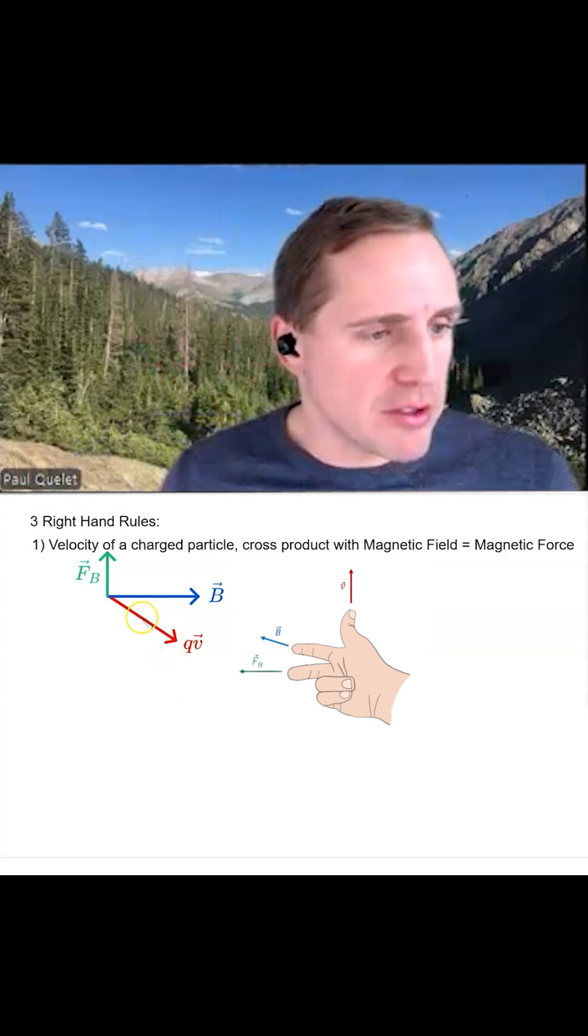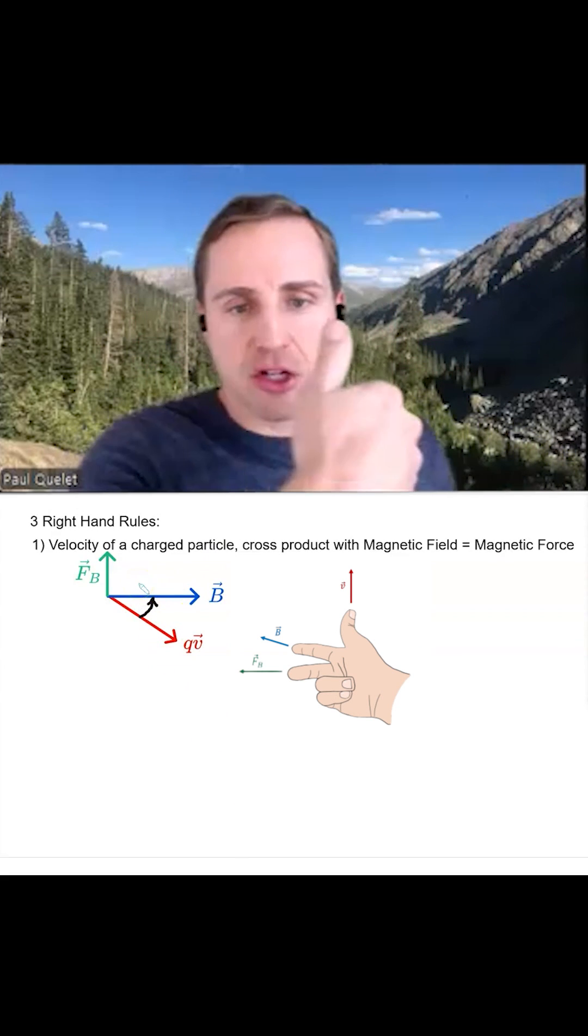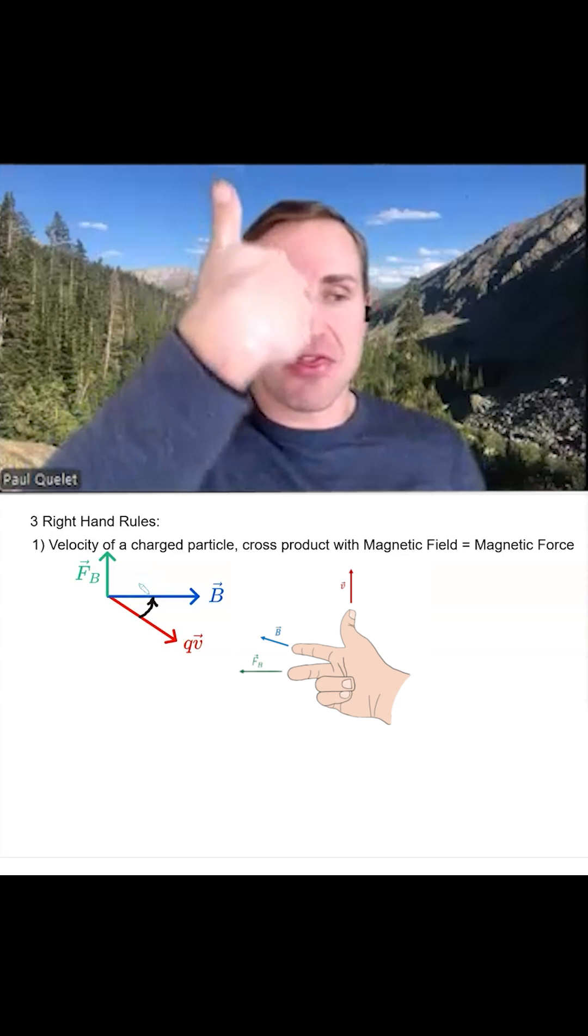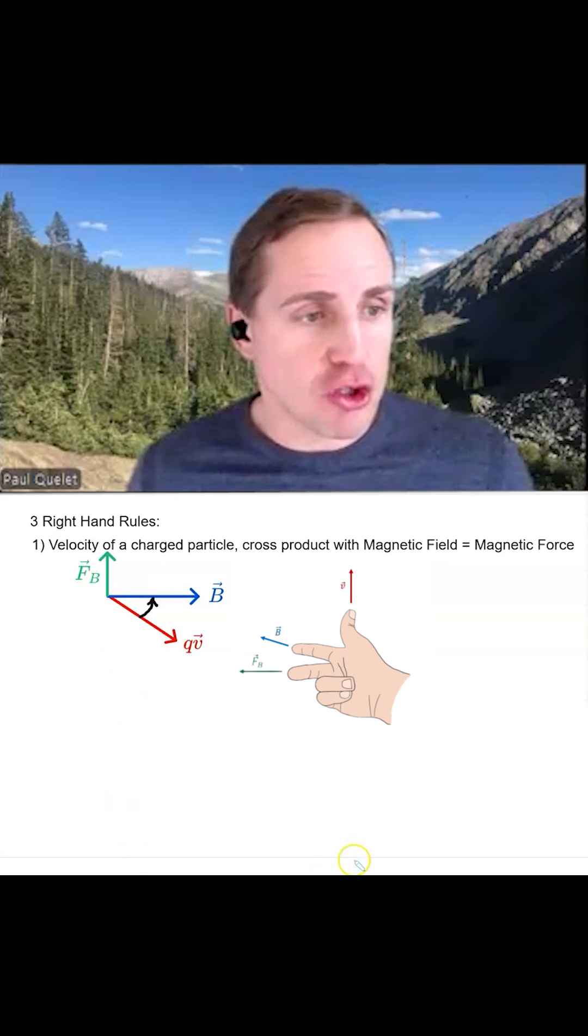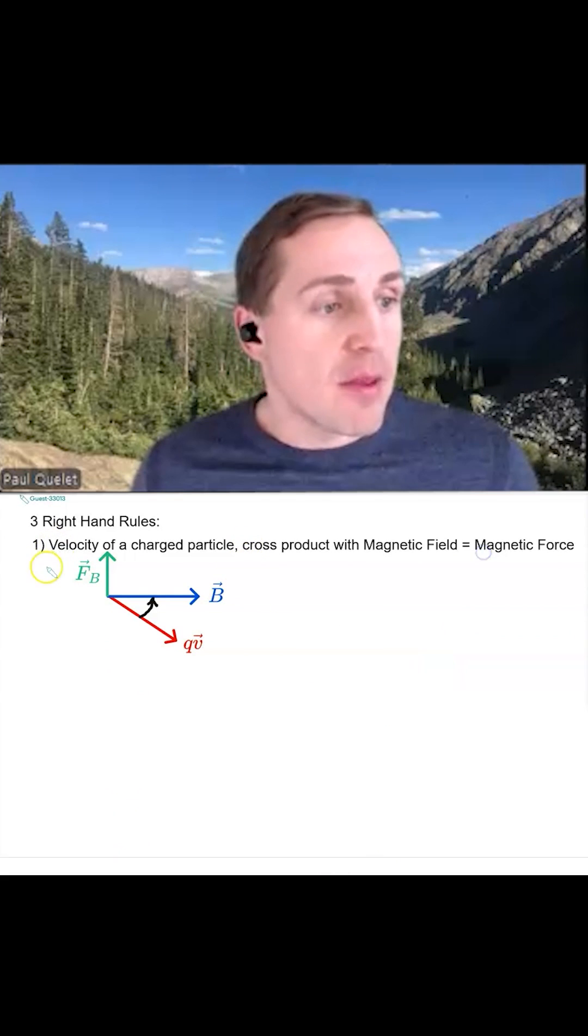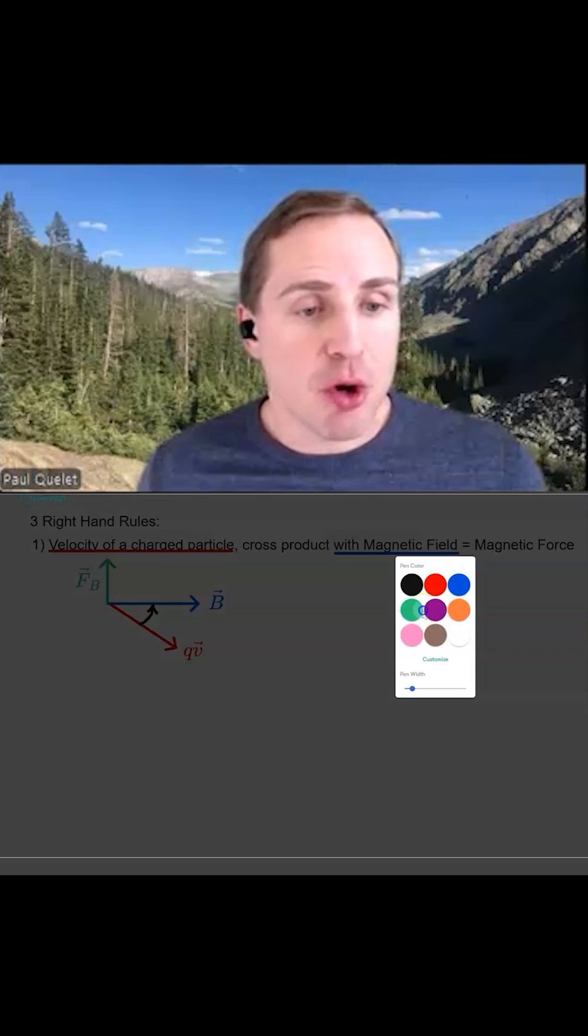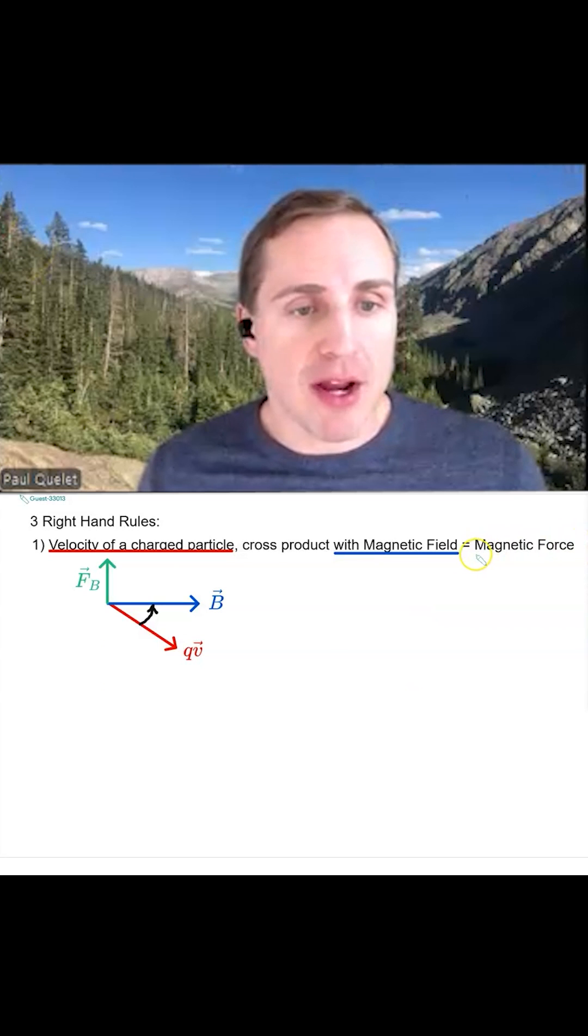What we're going to do is cross product QV into B and the thumb points in the direction of the magnetic force. This is when you have a charged particle moving through a magnetic field. This requires the use of the right-hand rule.